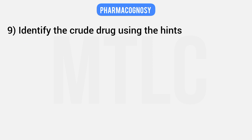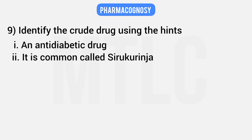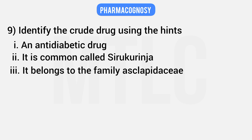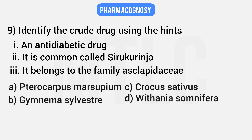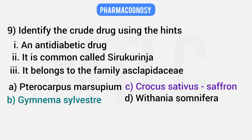Eighth question: identify the crude drug using hints — it is an anti-diabetic drug, one of its common names is 'Gurmarbooti' (Sirukurinjan), and it belongs to the Asclepiadaceae family. Gymnema sylvestre is the anti-diabetic drug from the Asclepiadaceae family. Note: Crocus sativus is saffron, and Pterocarpus marsupium is also anti-diabetic but does not belong to Asclepiadaceae.